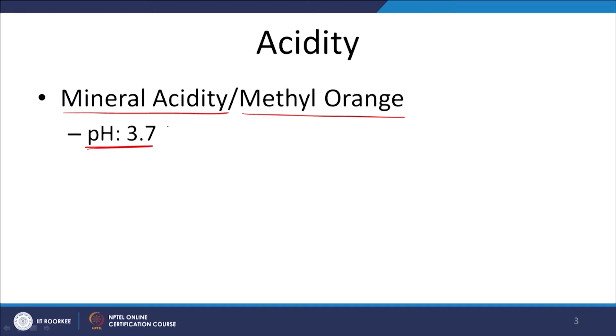The first case is mineral acidity or methyl orange acidity, where the equivalence point is pH 3.7. This measures only the strong acids present in the solution. H2CO3 with a pKa1 of 6.3 and pKa2 of around 10.3 is not called a strong acid, but HCl, HNO3, and similar acids are considered strong acids due to their low pKa values and ability to donate protons even at low pH. Mineral acidity measures only these strong acids.